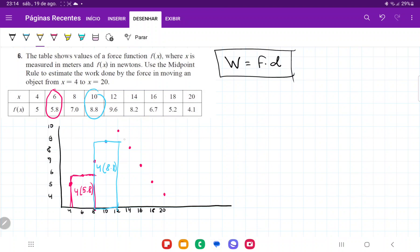For the next interval, we're going to take this midpoint here and extend it out. This is the midpoint evaluated at 14, so it's going to be this one here. Once more, force times distance. The distance goes from 12 to 16, so that's 4, and the force is 8.2.